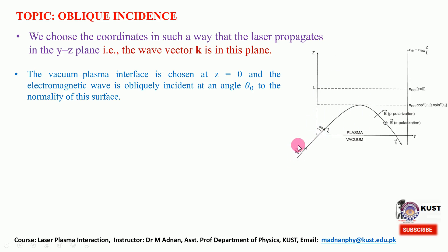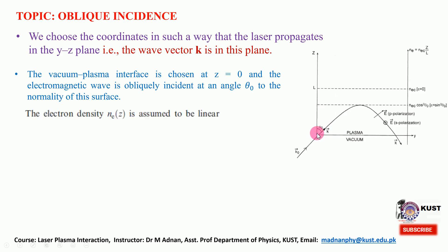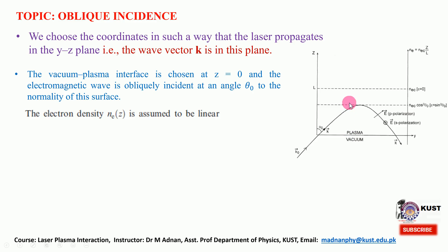The wave vector of the incoming electromagnetic wave is represented by k_0, with magnitude k_0. Inside the plasma the wave vector changes to k, because the plasma has density gradients. For simplicity, the electron density varies with z only, so the density gradient lies along the z direction. There is no gradient along y — only a one-dimensional gradient along z.